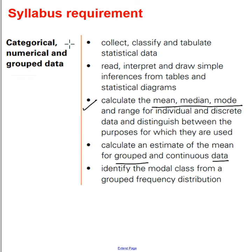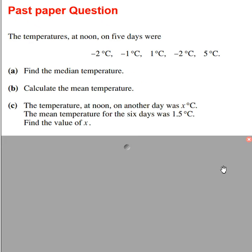Let's see what is the syllabus requirement for the topic categorical, numerical and group data. There are five basic topics. I'm not going to read in detail. We are going to cover only these aspects which I have highlighted in this video. We will talk about mean, median and mode for discrete data and also for the group data, which is written in the frequency table form. I have taken three examples or three past paper questions to explain this concept.